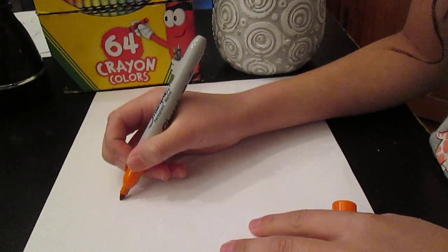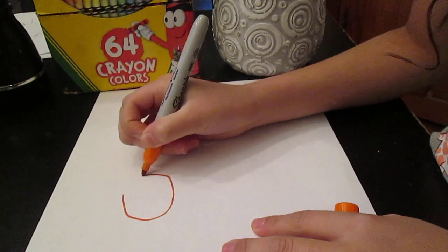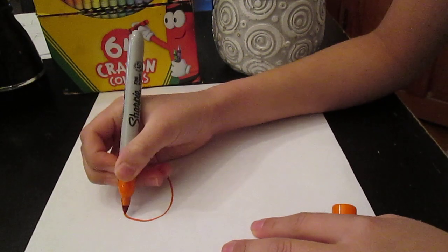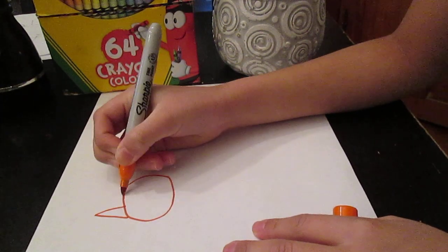Hello everybody, today I'm going to show you how to draw a cat. First, we're going to use an orange Sharpie. You're going to draw a circle and draw the ears.